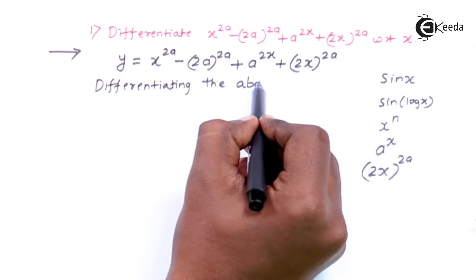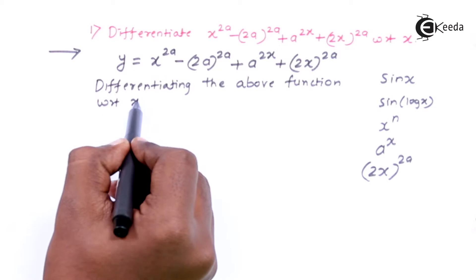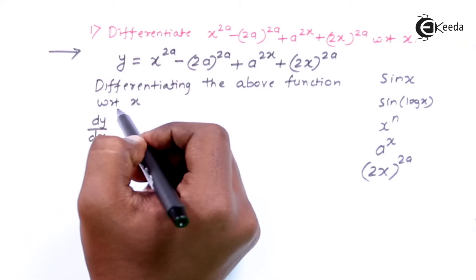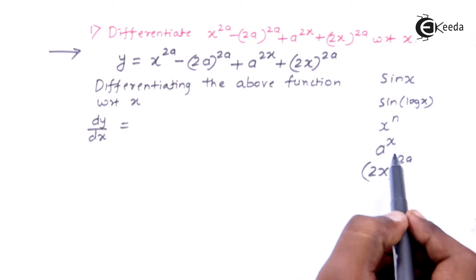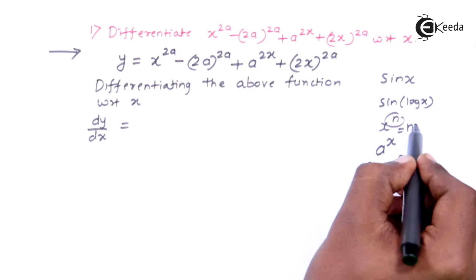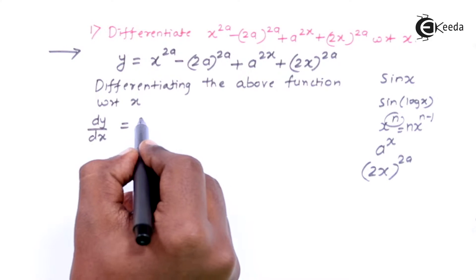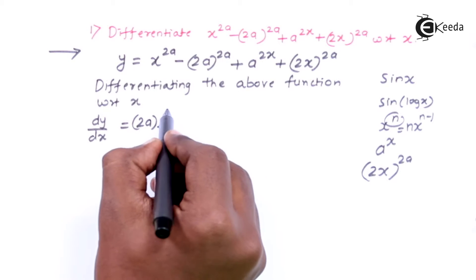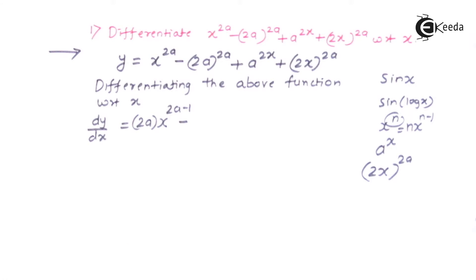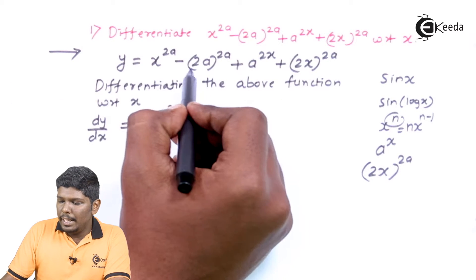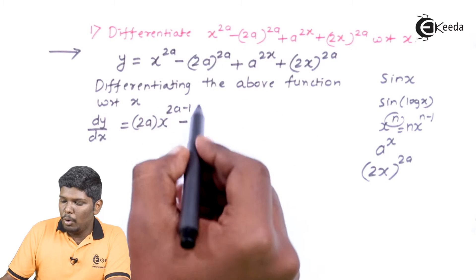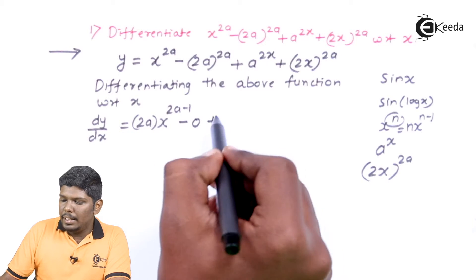So let us start differentiating this function with respect to x. dy/dx: the derivative of x raised to 2a is found by comparing with x raised to n, where n is 2a. The formula gives n·x raised to n minus 1, so this becomes 2a·x raised to 2a minus 1, minus 0 for the constant term. The derivative of a constant is 0 because there is no x in that term. The next function is a raised to 2x, which we compare with a raised to x.